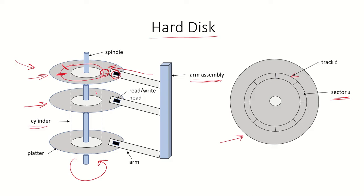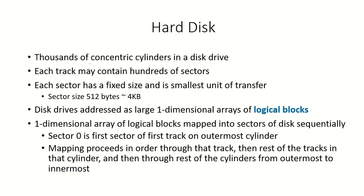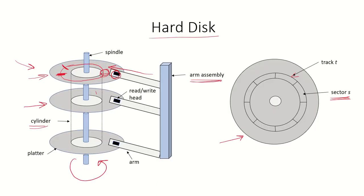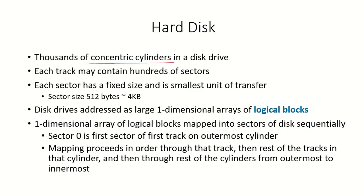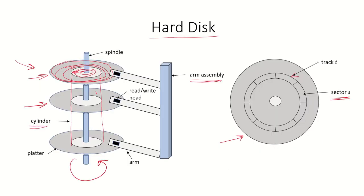So this is the basic structure of the hard disk. There can be thousands of concentric cylinders in a disk drive. This set of tracks at one radius forms one cylinder, then another cylinder at the next radius, and so on. There would be thousands of tracks, each track corresponding to one cylinder, and each track may contain hundreds of sectors.